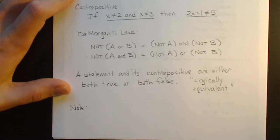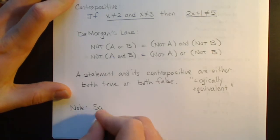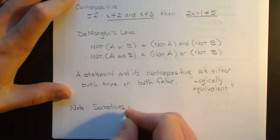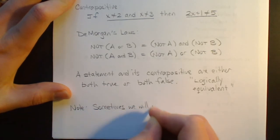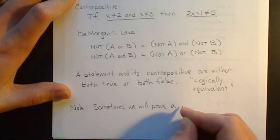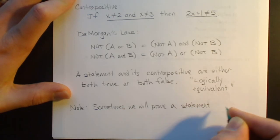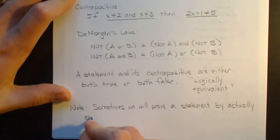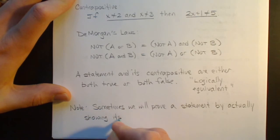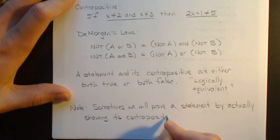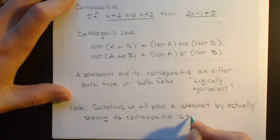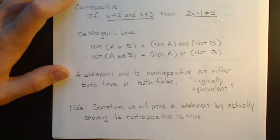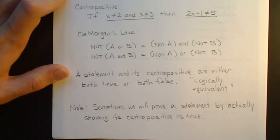So they sometimes will prove a statement by actually showing the contrapositive is true. And of course, when you're writing this proof, if you're going to use a trick like this, you should really alert the reader saying 'we will use the contrapositive' so that they have some idea of where you're going with your proof. That is the contrapositive.